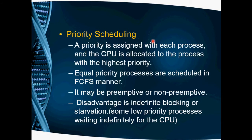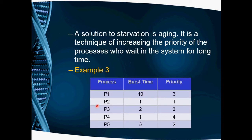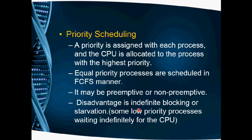The third scheduling algorithm is priority scheduling. A priority is assigned to each process, and the CPU is allocated to the process with the highest priority. The highest priority process will be executed first by the CPU. Equal-priority processes are scheduled in FCFS manner. Like SJF, priority scheduling may be both preemptive and non-preemptive. The drawback is indefinite blocking, or starvation.